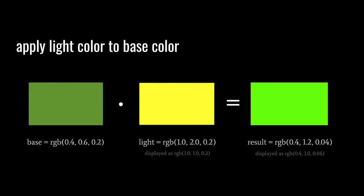Light in the real world is a quite complicated phenomenon — there are different degrees of intensity, different wavelengths, and how those wavelengths and intensities interact with surfaces is quite complicated. But in rendering we work with a simplified conception of light: we imagine points on the surface have a base color, and a light ray has its own color. Those are combined by multiplication to get a resulting RGB value.